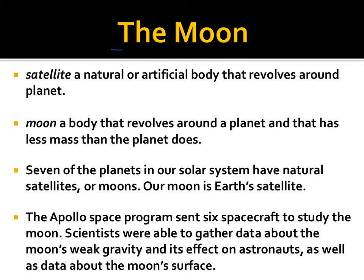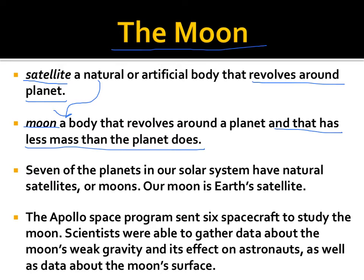We're going to start by defining some basic terms. A satellite is either a natural or an artificial body — sometimes man-made, sometimes natural — that revolves around a planet. In this case, we're talking about Earth. A moon is a natural body that revolves around a planet and has less mass than the planet does, so the moon of a planet is smaller than the planet it revolves around, but it could be bigger than other planets in that solar system.